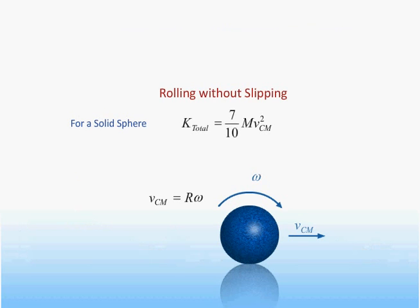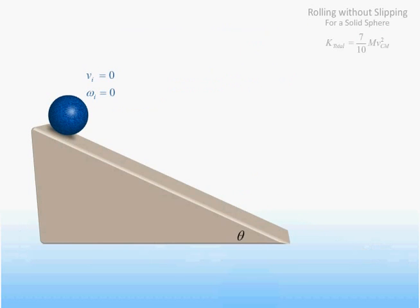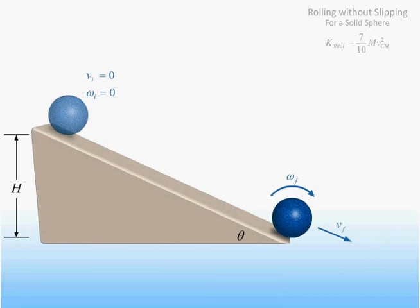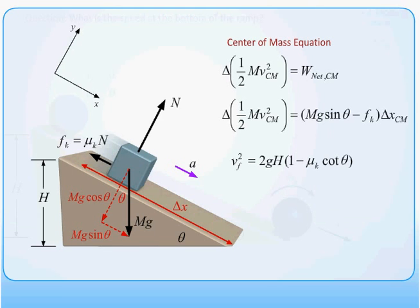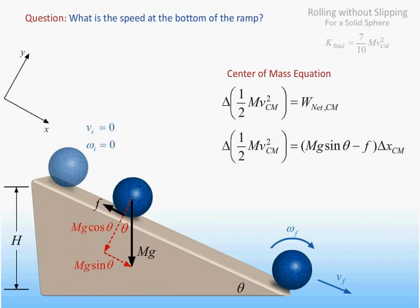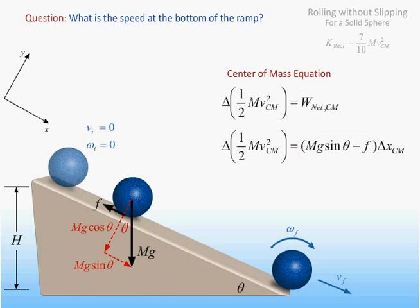We've just determined the total kinetic energy of a ball that rolls without slipping, and we will now apply this result to the situation shown: a solid sphere released from rest at the top of a ramp that then rolls without slipping to the bottom. We'd like to know its speed when it reaches the bottom. We have solved similar problems when the object was sliding rather than rolling down the ramp. In those cases, we applied the center of mass equation that says the change in kinetic energy is equal to the macroscopic work done by all forces. The center of mass equation still applies here, but the macroscopic work done on the ball equals the displacement of the center of mass times the difference between the component of weight down the ramp and the frictional force. We cannot determine the final velocity from this equation alone because we do not know the magnitude of the frictional force.